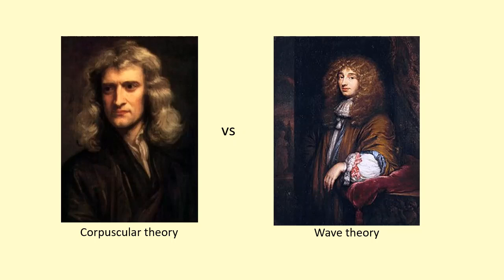Despite Huygens' principle being able to explain much more, it wasn't accepted because people trusted Newton due to his much higher reputation from all his previous successful theories. Even when Young's double slit experiment showed that light can diffract and interfere, people still trusted Newton. It wasn't until about 100 years later, when they measured the speed of light in a denser medium like water and showed it is slower there — unlike Newton's prediction that it would be faster — that people finally started believing Huygens' principle.